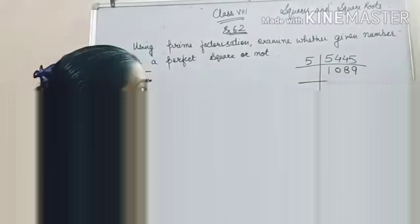I am taking one more example. Let it be 729. Now, do prime factorization of 729. It is divisible by 3. 243. Again, we will divide it by 3.